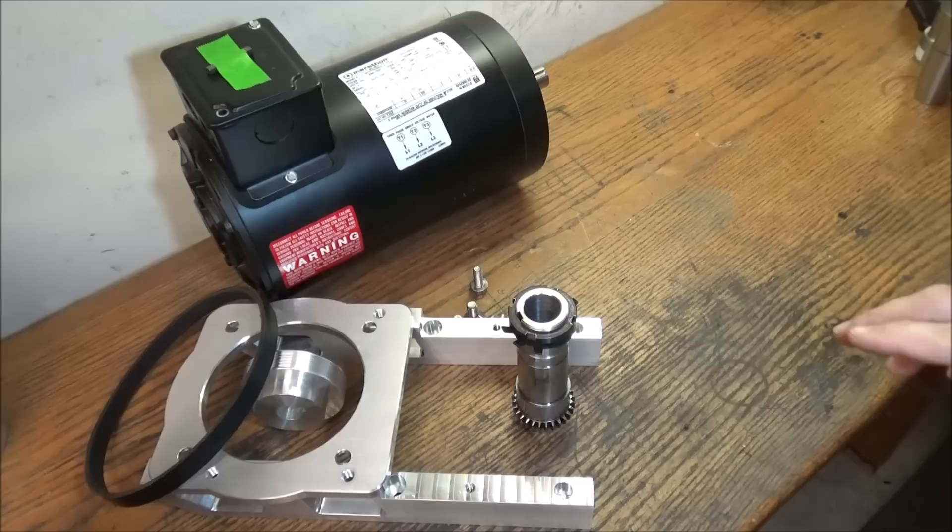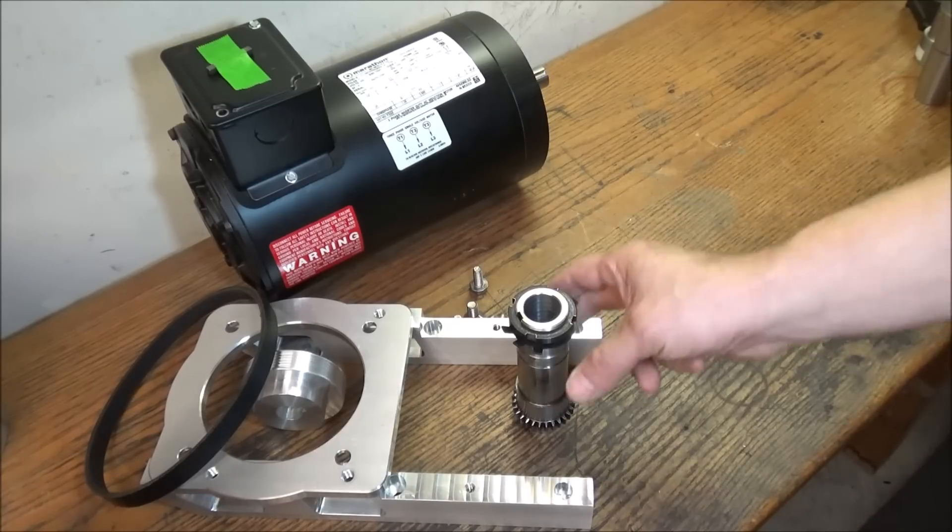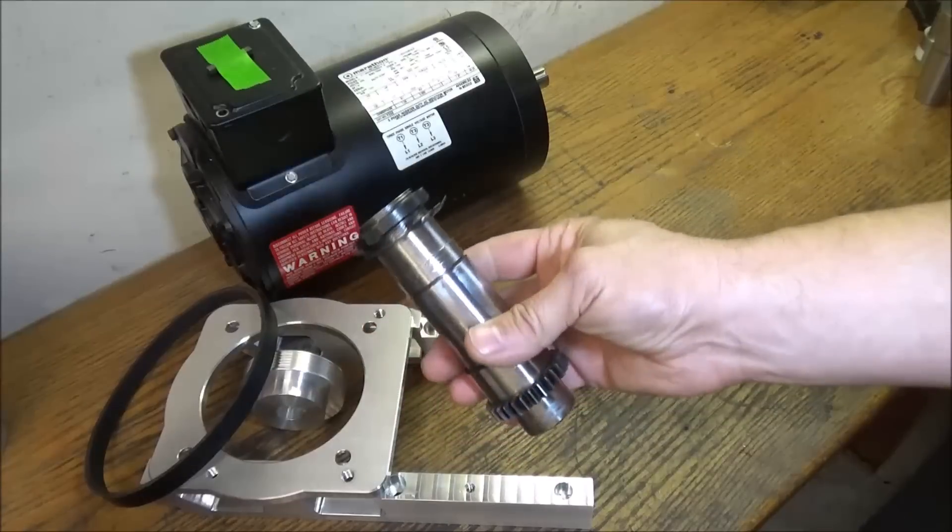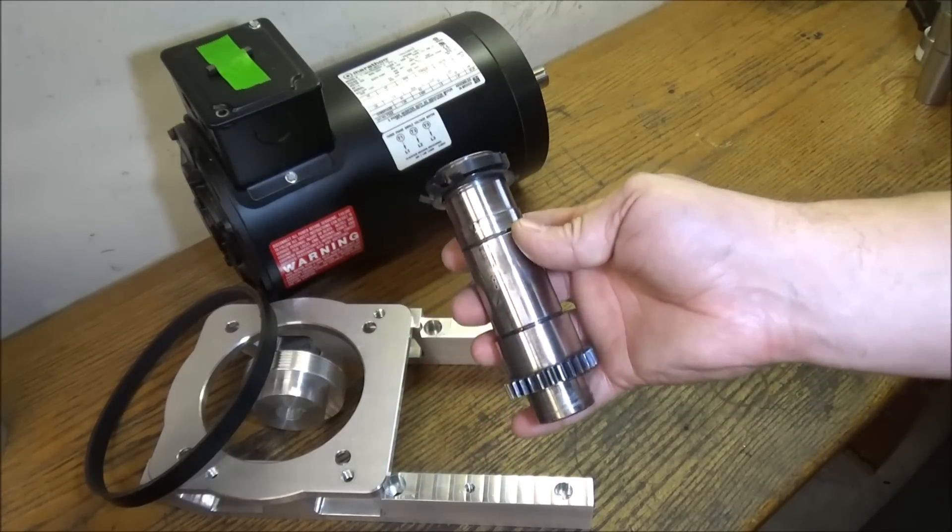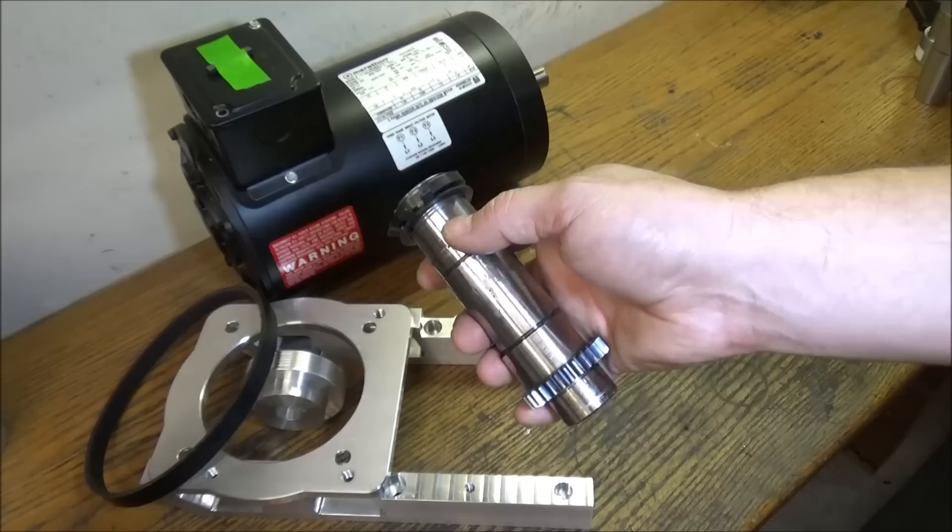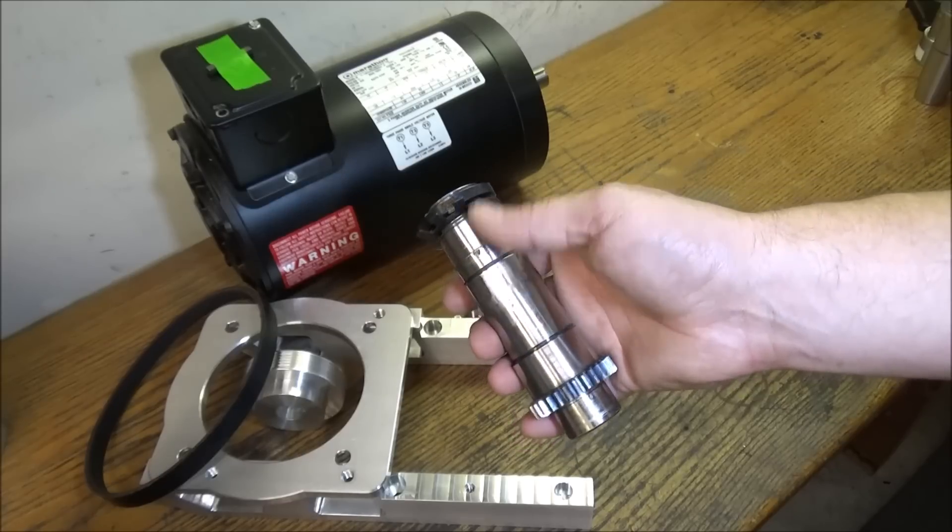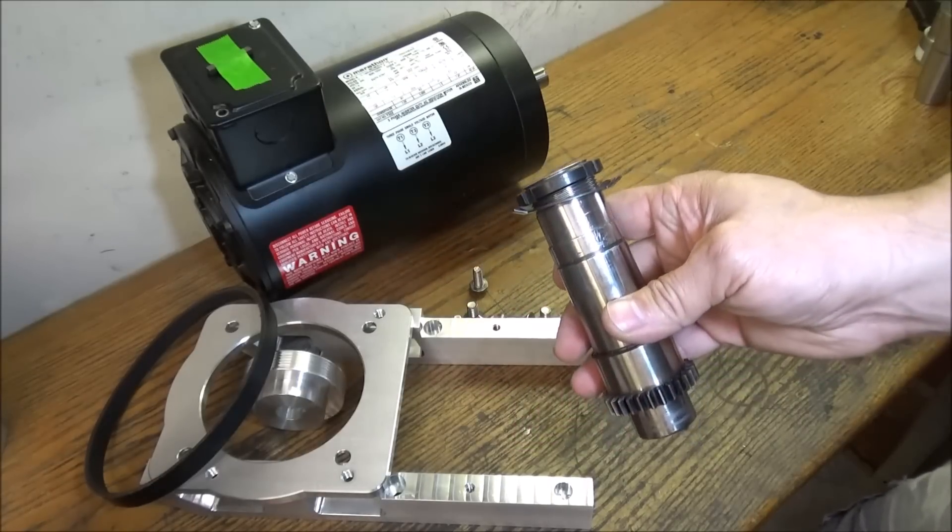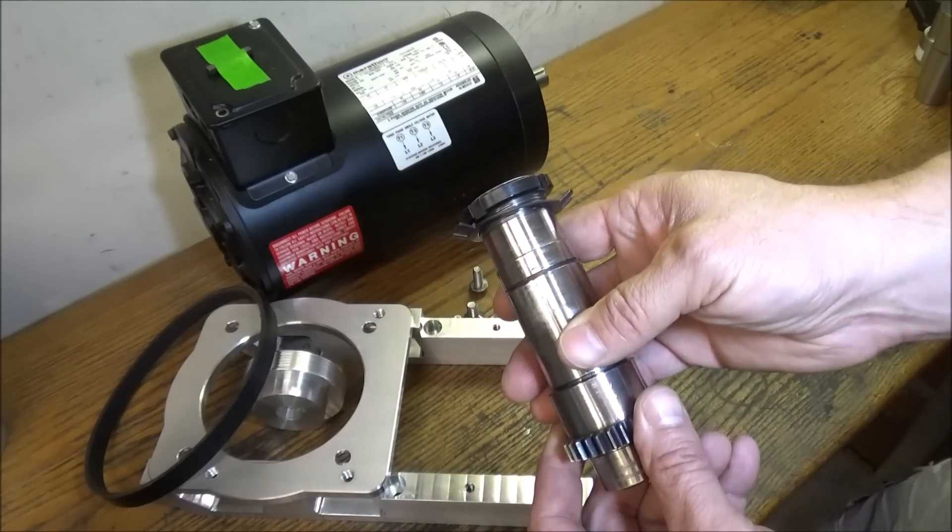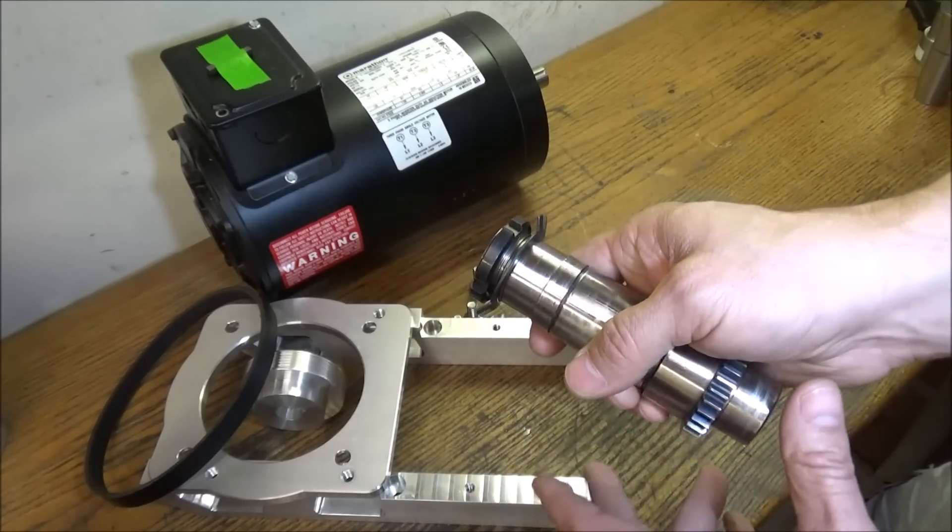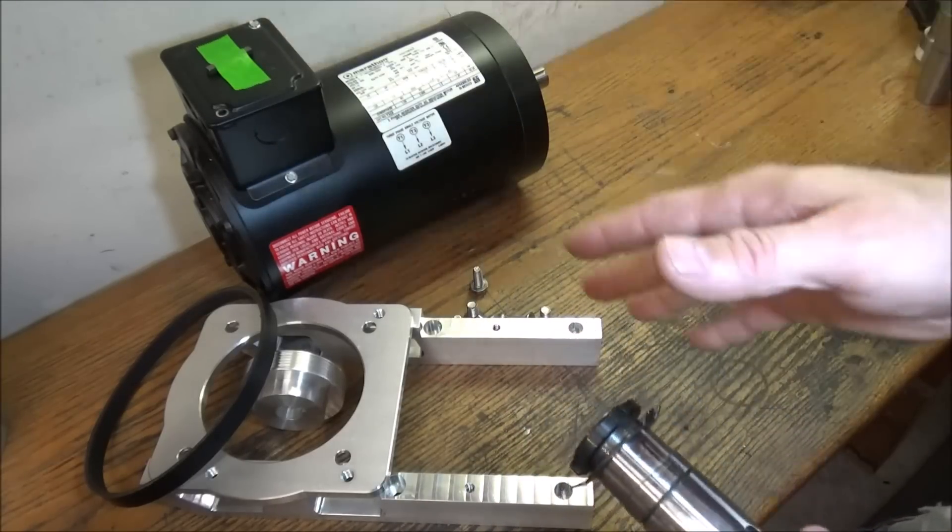This will be for my linear rail converted machine that I'm currently working on. Now I'm currently running this modified quill on my original Precision Matthews. I have not had any issues whatsoever. However for the new machine, instead of trying to modify all these quills, I've had several requests for a belt drive kit.